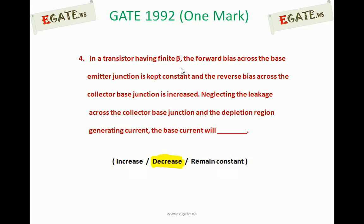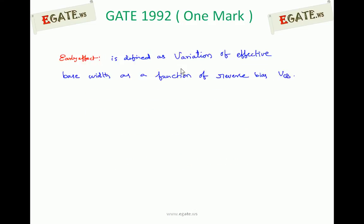The correct option is that base current decreases. Base current decreases when the emitter base junction is kept constant and as you are increasing the reverse bias across the collector base junction. This question is related to early effect, whose other name is base width modulation.